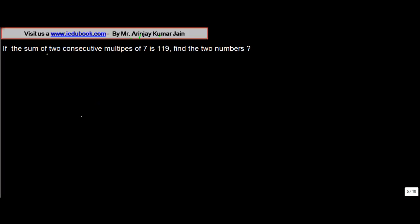If the sum of two consecutive multiples of 7 is 119, find the two numbers. Let's first analyze what is given to us. We are told that the sum of two consecutive multiples of 7, so there are two multiples of 7.